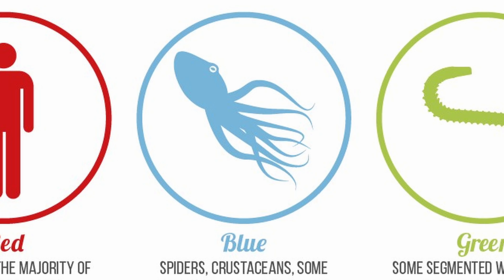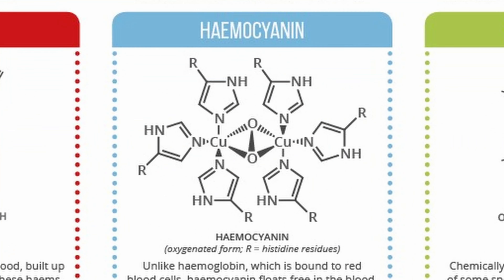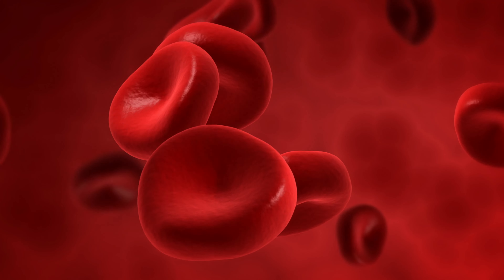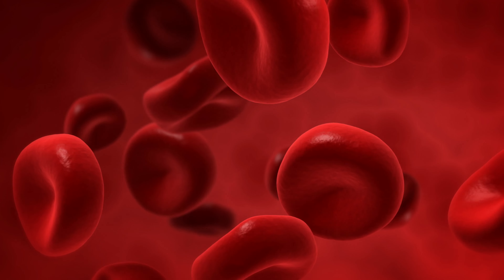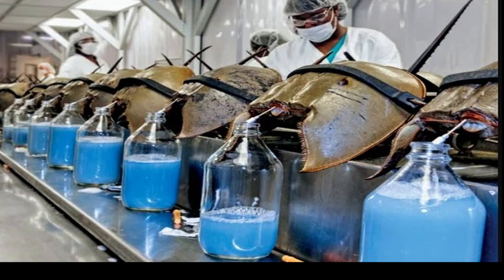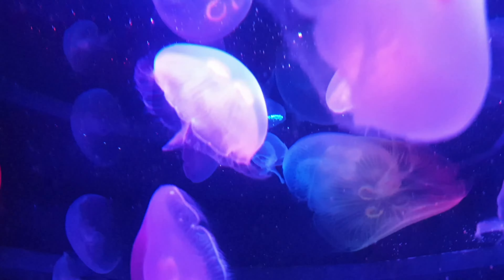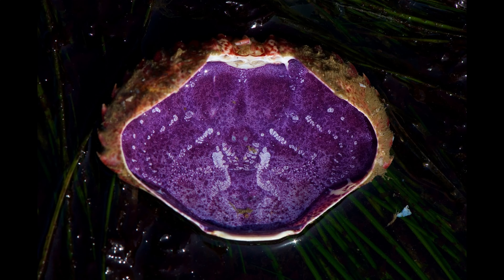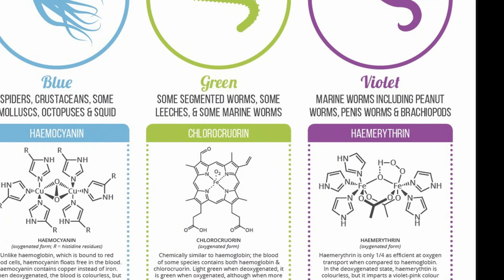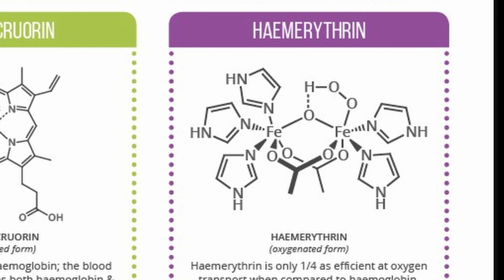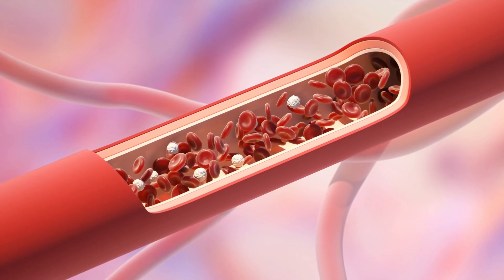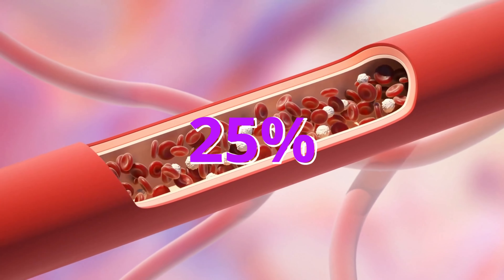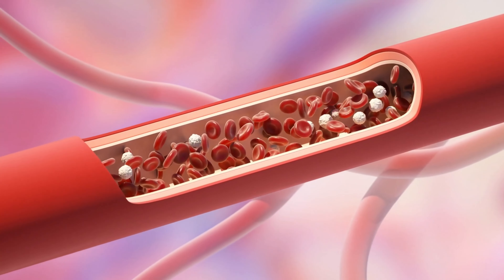This is called Hemocyanin, which means that Hemocyanin has copper in it. This Hemocyanin is what gives the blue color. Hemocyanin is more efficient — when we compare it to hemoglobin, it is about 25% more efficient. Hemoglobin is also effective in carrying color.